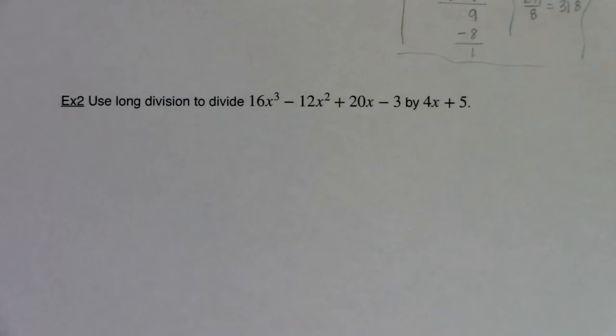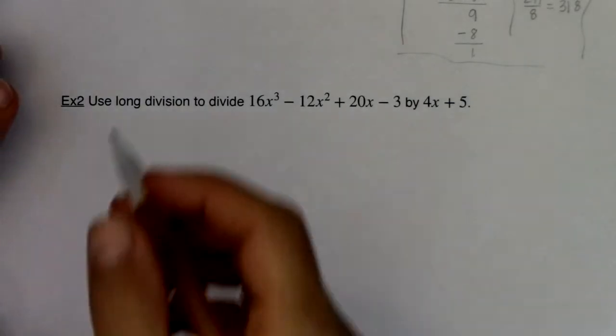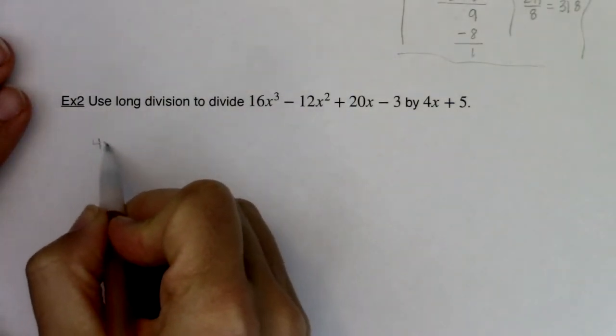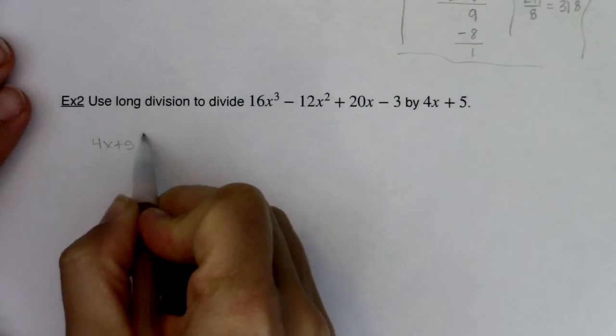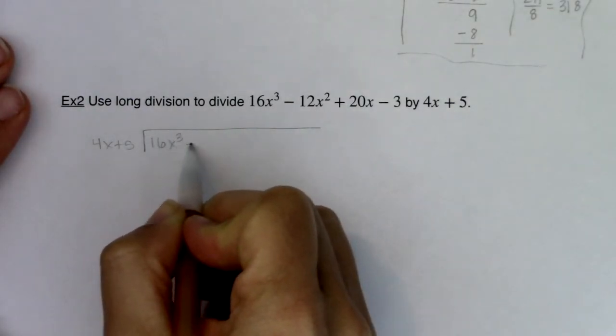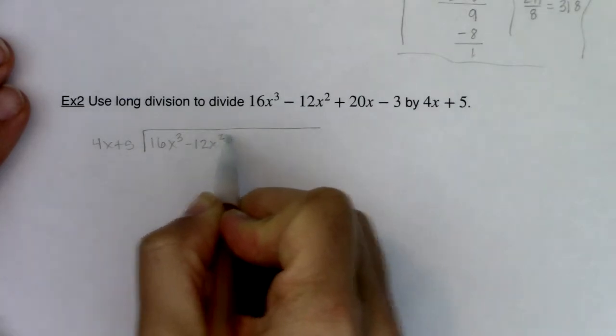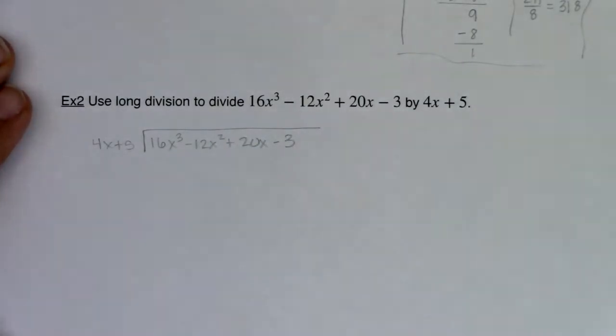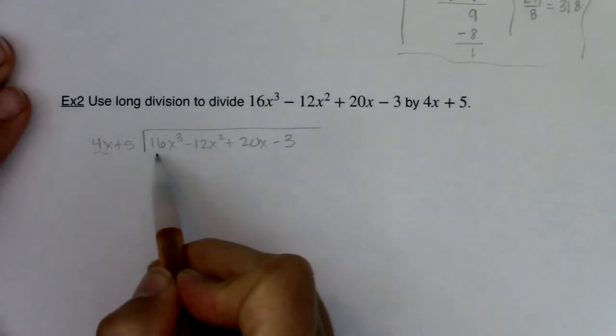Okay everyone, let's try and use long division to divide 16x cubed minus 12x squared plus 20x minus 3 by 4x plus 5. So let's see what we have here. I'm going to go 4x plus 5 divided into 16x cubed minus 12x squared plus 20x minus 3. We're going to go lead term to lead term.